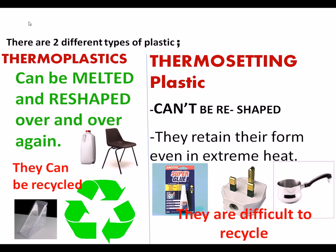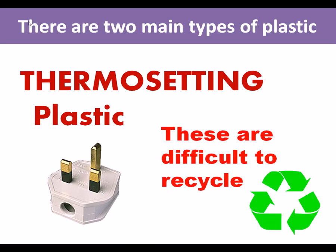Let's look at the types of plastics. There are two major types: thermoplastics, which can be melted and reshaped over and over and can be easily recycled; and thermosetting plastics, which once heated and cooled retain their form and are difficult to recycle — they can be recycled, but they are much more difficult to recycle.